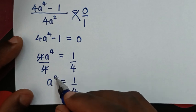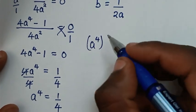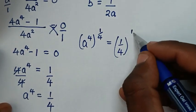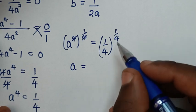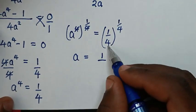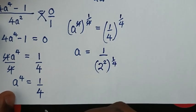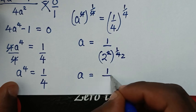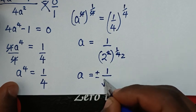In the next step, to remove this power of 4, we raise both sides to the power of 1 over 4. So a⁴ raised to the power of 1/4 — the powers cancel — gives a = (1 over 4)^(1/4). We apply the power to numerator and denominator: 1^(1/4) is 1, over 4^(1/4). Since 4 = 2², that becomes 2^(2·1/4) = 2^(1/2), which is square root of 2. So a is equal to plus or minus 1 over square root of 2.